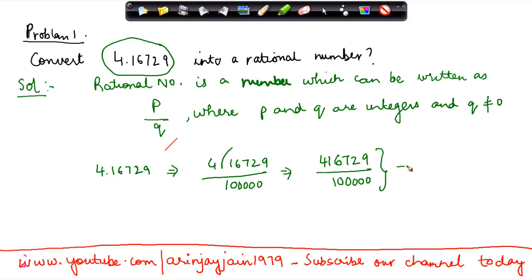Now, this is a rational number because it is written in the form of p by q, where this number stands for p, this stands for q, and we know that in this case q is not equal to 0.